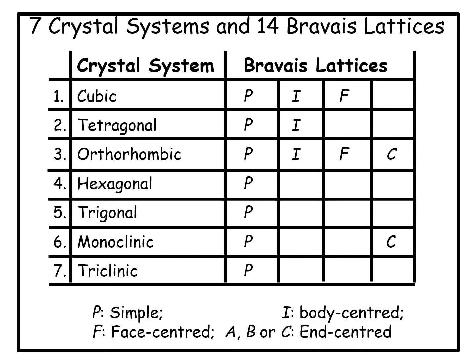The rows show that in each crystal system, you have one or more Bravais lattices. In the cubic crystal system, we have 3 Bravais lattices, designated as P, I, and F.